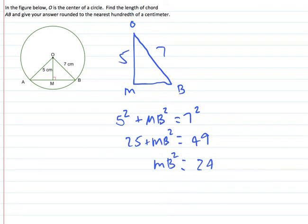Now we need to take the square root. This isn't a perfect square so we are going to have some decimals. So the square root of 24 comes out to about 4.899. So MB is going to be 4.899 centimeters.